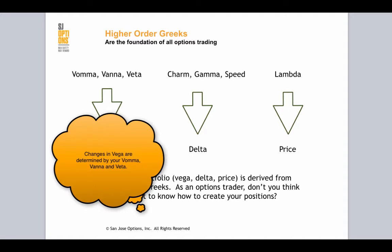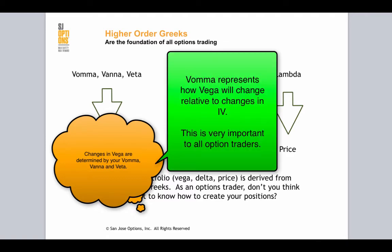So when we typically manage a portfolio of options, you'll have an output so you can read the Vega. But what's behind that Vega — where is that Vega number coming from? As your volatility changes, your Vega is actually going to change depending on what that Vama is.